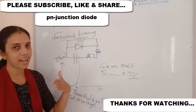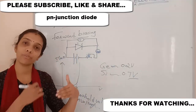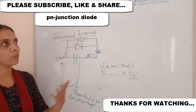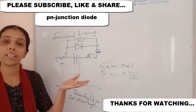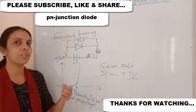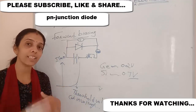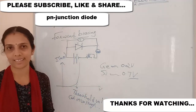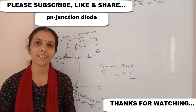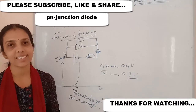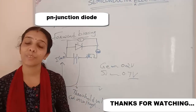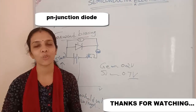In the PN junction, before the current flows, there is a resistance region due to the barrier potential. As voltage is applied in forward bias, this resistance decreases. In the next video we will cover reverse biasing. Thank you for watching — if you like the channel please subscribe.